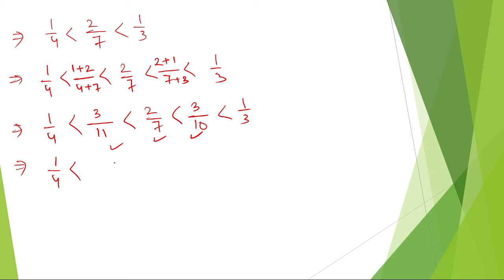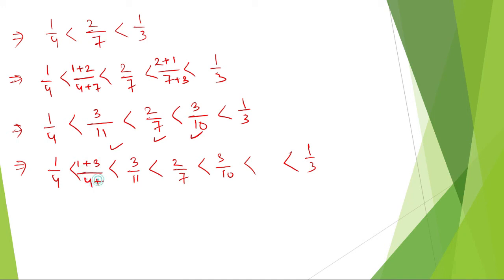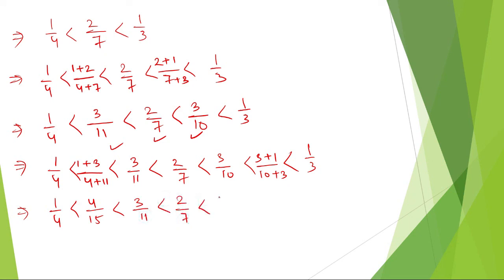So let us put a gap and write down 3 by 11, then 2 by 7. You can do it anyway you find suitable. Let us put a gap again. So here, 1 plus 3 divided by 4 plus 11, and 3 plus 1 divided by 10 plus 3. So we can write: 1 by 4 less than 4 by 15, less than 3 by 11, less than 2 by 7, less than 3 by 10, less than 4 by 13, less than 1 by 3. So we got 1, 2, 3, 4, 5.